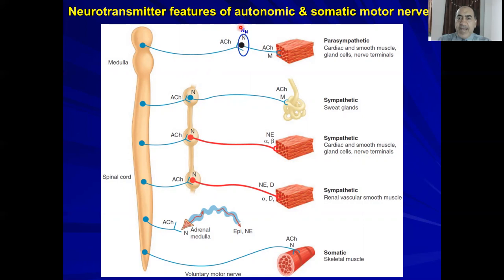In the ganglia, the receptors are called NN. Acetylcholine comes directly from the CNS and acts on nicotinic NN receptors. The same applies to the adrenal medulla — acetylcholine is released from CNS neurons, and the receptor is nicotinic NN because the adrenal medulla is a kind of modified ganglia. So all of these are NN.